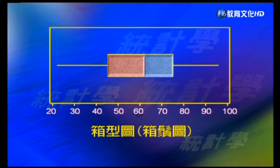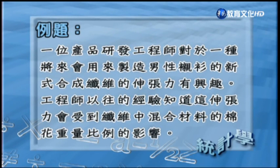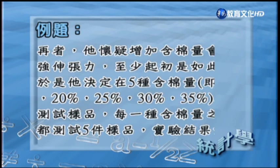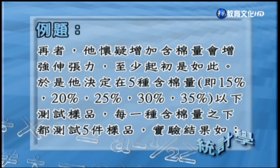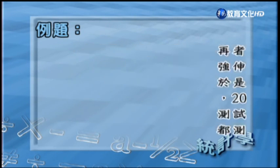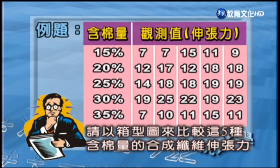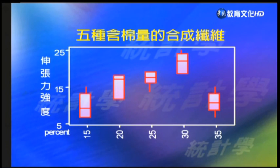再來要介紹的叫箱形圖。箱形圖的圖形呈現，就是像一個箱子，然後各有一個直線延伸出來，往上代表數據的最高值，往下是最低值，而中間箱子的中間那條線代表數據的最中心位置。我們也可以用橫的來呈現箱形圖。最後看一個例子，一個產品研發工程師想了解纖維中5種不同的含棉量對合成纖維伸張力強度的影響，分別在15%到35%這5種不同含棉量的情形做實驗。把這些資料畫箱形圖做比較，可以看得出來含棉量越來越多，伸張力強度越來越高，一直到最高的部分又急速下降，這就是箱形圖的使用方法。